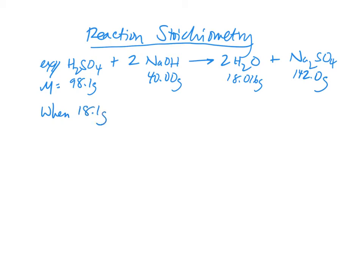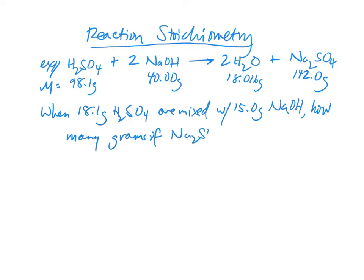Let's say that we are given 18.1 grams of sulfuric acid and we're going to mix it with 15 grams of NaOH. We want to know how many grams of sodium sulfate are going to theoretically form.